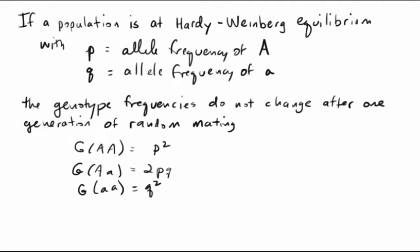Under random mating, by definition, random mating means that the likelihood of mating with any other member of the population is about the same. The likelihood of anybody mating with a big A big A homozygote would be exactly equal to the frequency in which you're likely to encounter them, which would be p squared. The likelihood of mating with a heterozygote would be 2pq, and the likelihood of mating with a little a homozygote would be q squared.